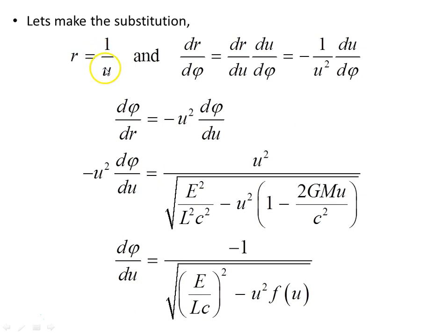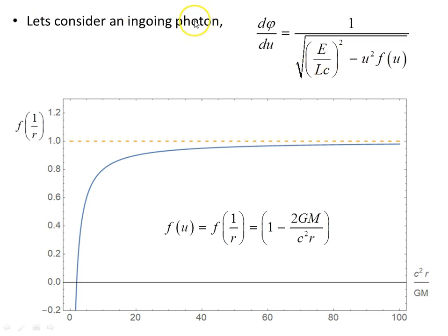Making the substitution r = 1/u, we head back to the orbit equation. We have dr/dφ = dr/du · du/dφ, and dr/du = -1/u² · du/dφ. Rearranging, dr/dφ = -u² · dφ/du, and we find dφ/du. We consider an ingoing photon to reverse the direction, giving dφ/du = 1 over this expression. The function f(u) = f(1/r) is evaluated: plotting it shows it asymptotes very quickly to f = 1 across the range of r values.